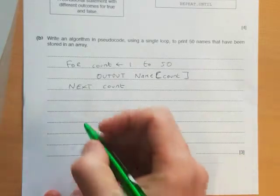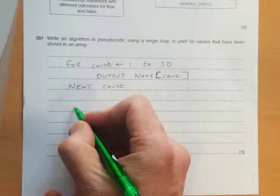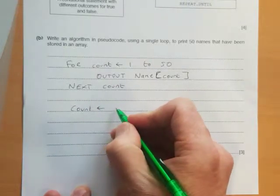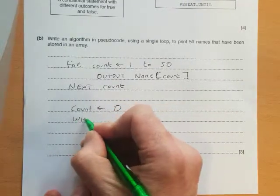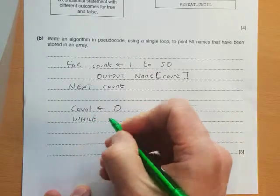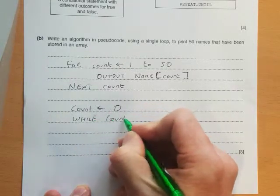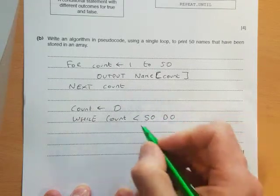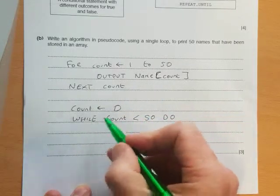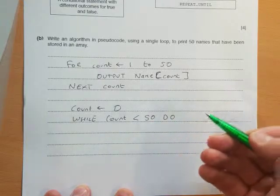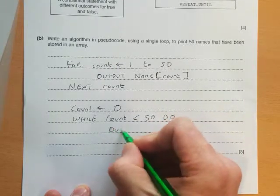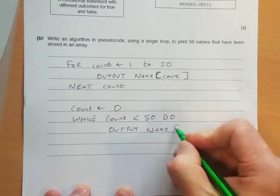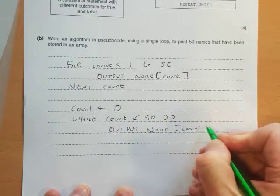So what they're doing is they're setting a counter to zero, and they're using a while loop. So while count is less than 50, do. You can see here, this is going to run until it gets to 50, then it's going to stop. Then the same line to output the value: output name[count].